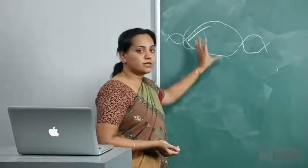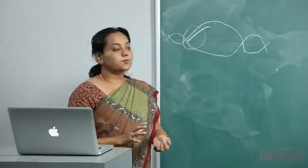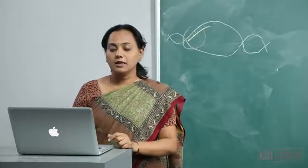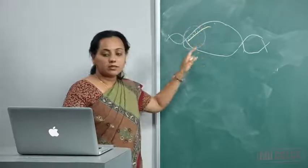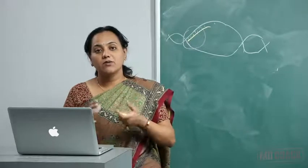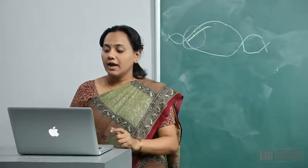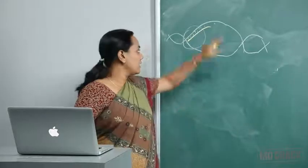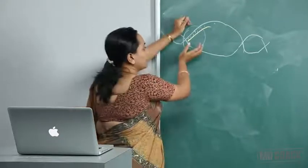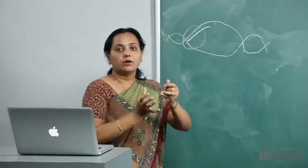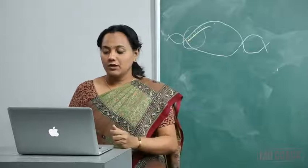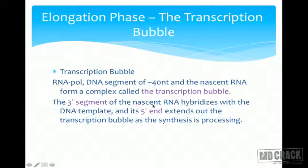Before the elongation phase, the structure formed is called the transcription bubble. This transcription bubble contains RNA polymerase, a DNA segment of approximately 40 nucleotides in length, and the nascent RNA. Together they form a complex called the transcription bubble, which keeps moving until it reaches the end of the gene. The three prime segment of the nascent RNA hybridizes with the DNA template.